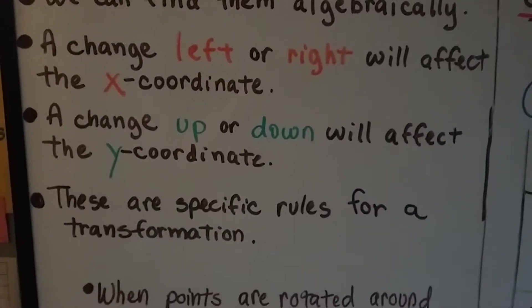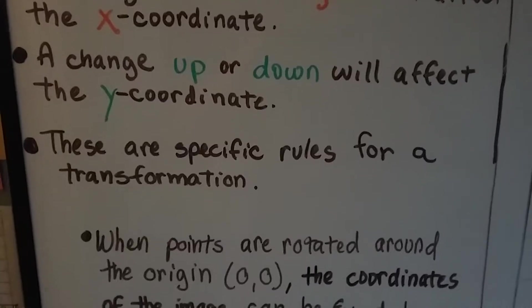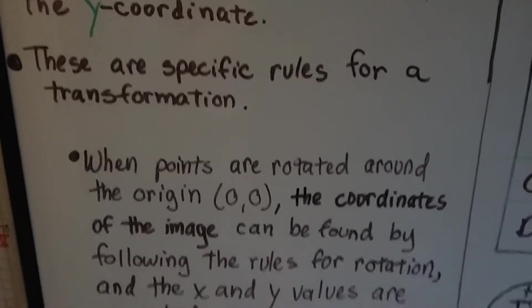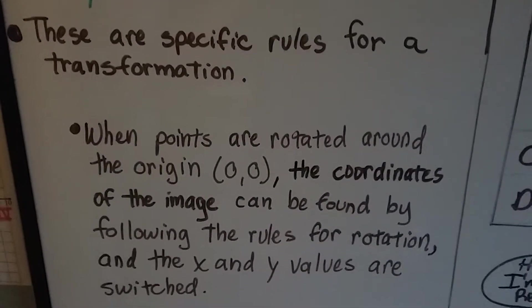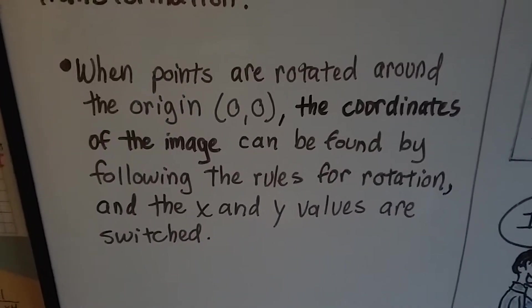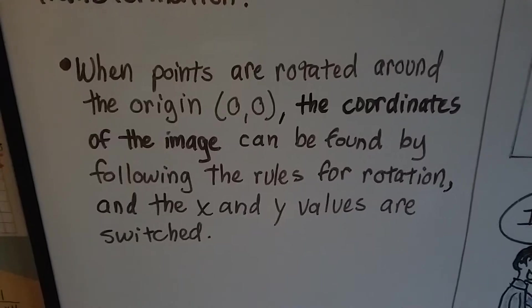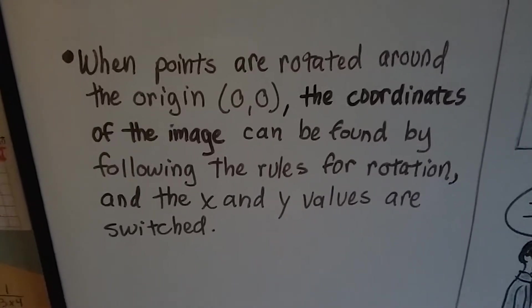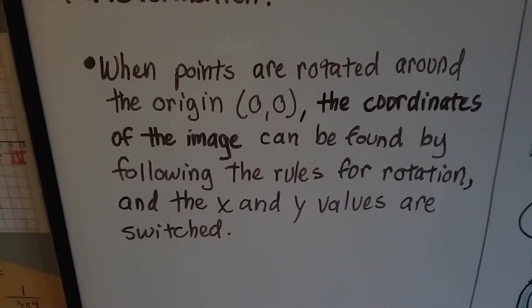A change left or right will affect the x-coordinate. A change up or down will affect the y-coordinate. These are specific rules for a transformation. When points are rotated around an origin, the coordinates of the image can be found by following the rules for rotation, and the x and y values are switched.